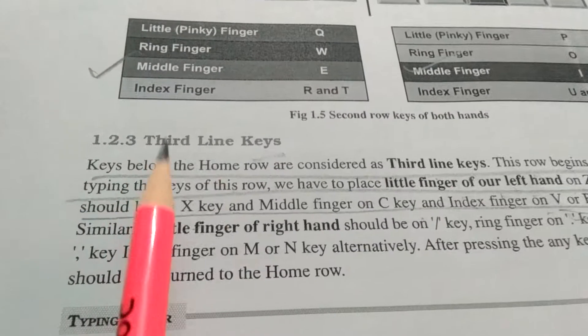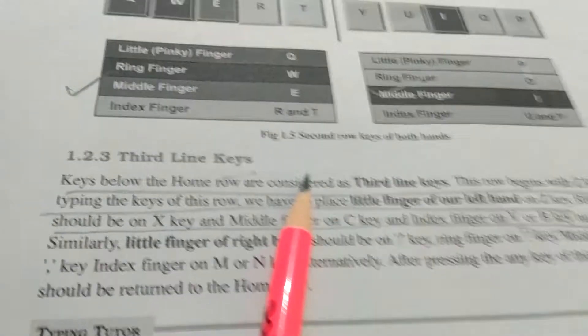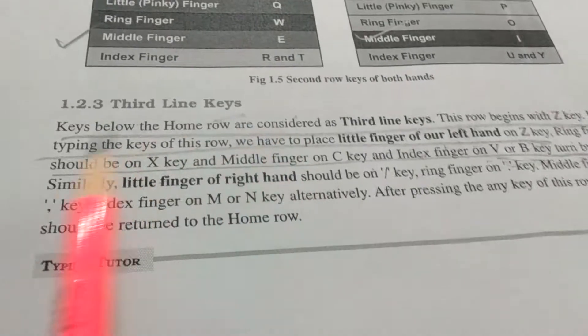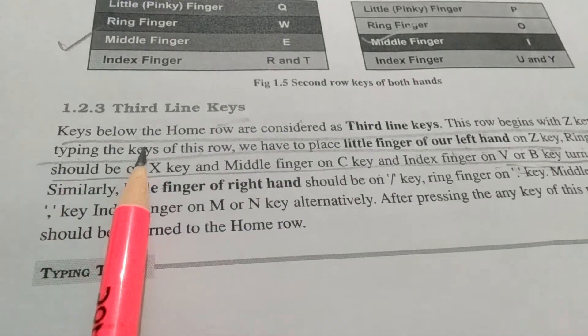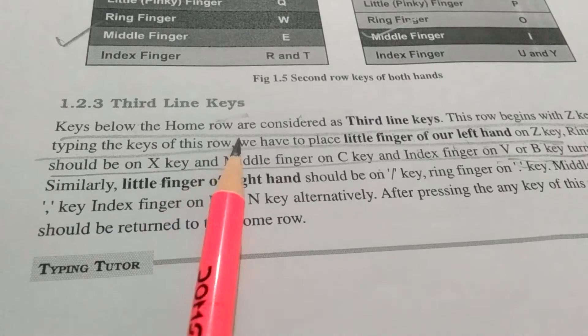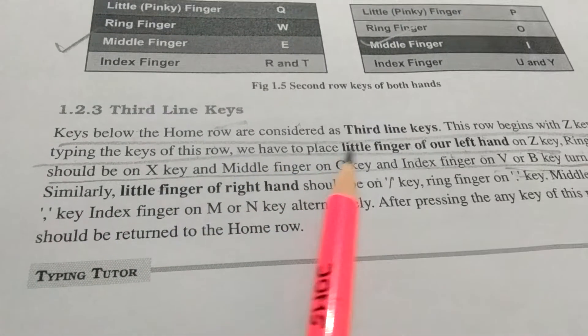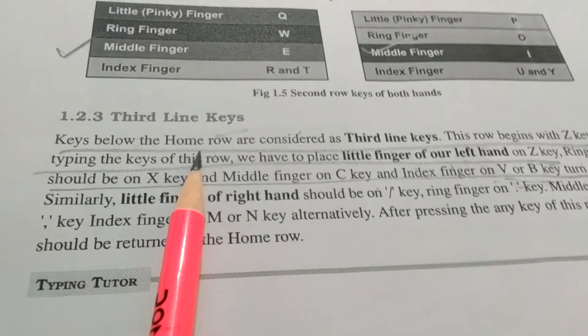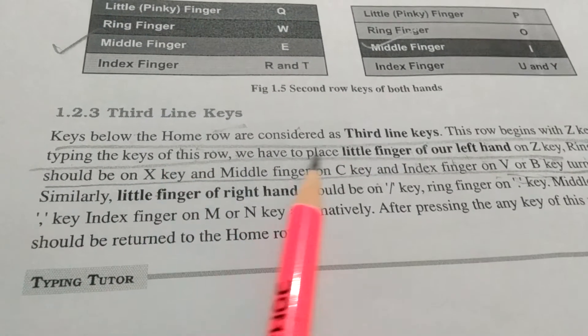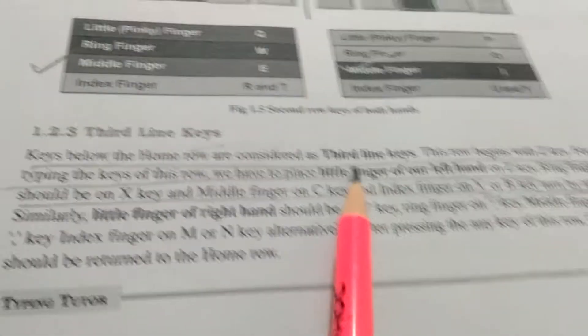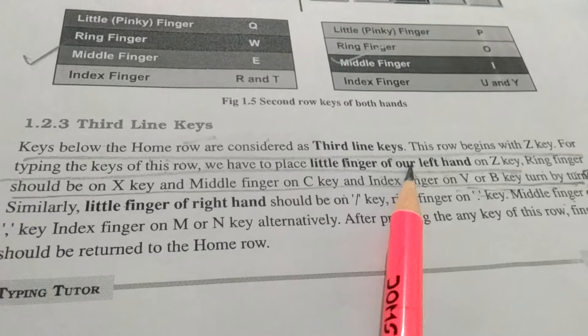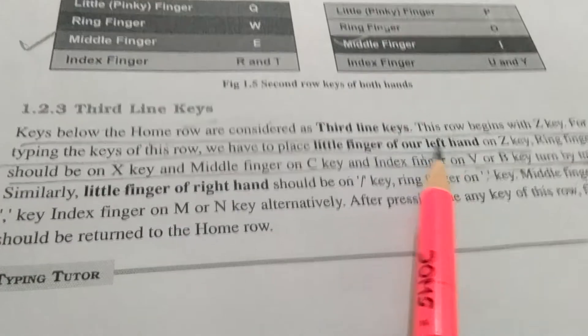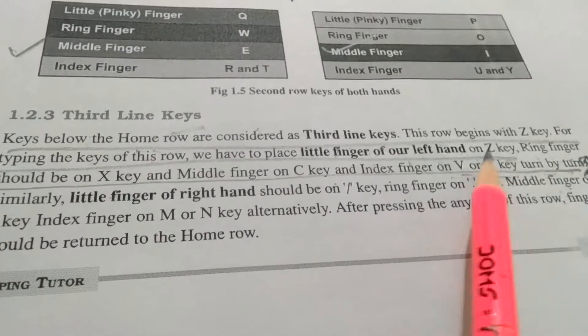The next topic is third line keys. What is the third line key? Below the home row is considered as the third line. This row begins with Z.